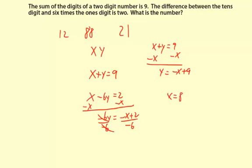So x equals 8, y equals 1. Now our two-digit number is modeled by x, y. So if x is 8, y is 1, our number is 81.